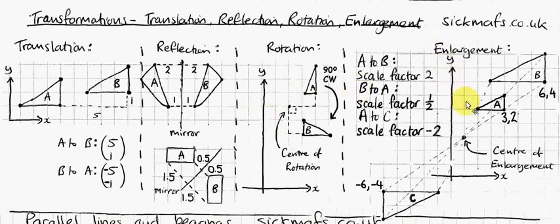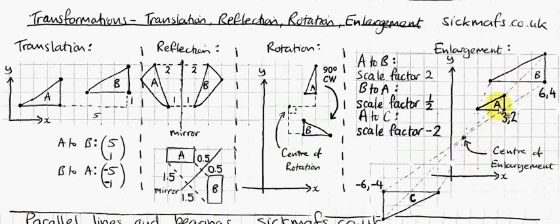Let's do a bit of enlargement now. We've got different scale factors, which basically tell you how much bigger or smaller we're making the shape. Scale factor 2 means doubling the size, times by 2. Scale factor 3 is times by 3, etc. Scale factor half is times by a half, so you make it smaller. We've got a centre of enlargement, just like your centre of rotation — it's really important because it tells you which direction your shape is going, and where the enlarged image ends up.